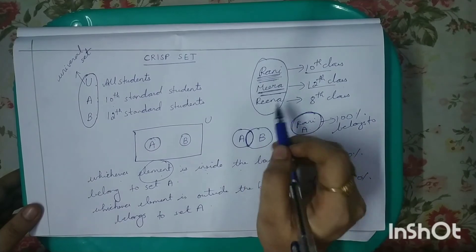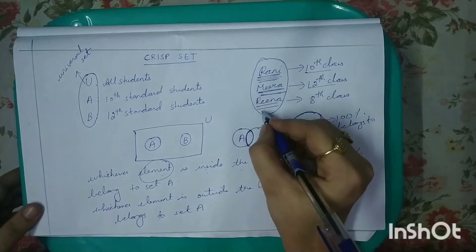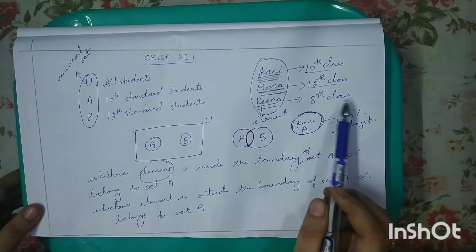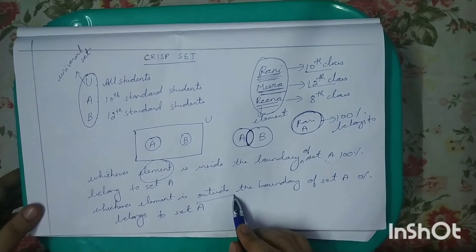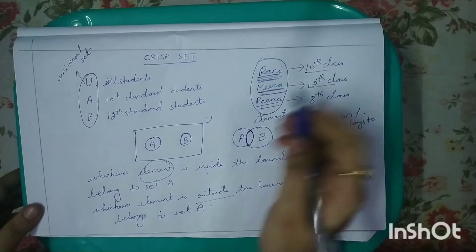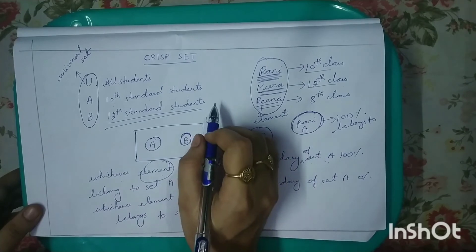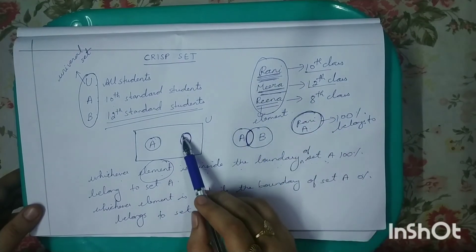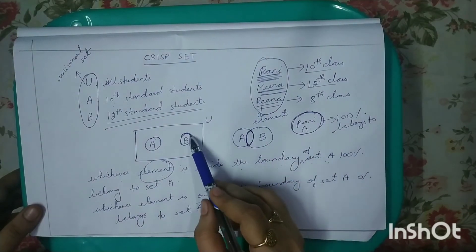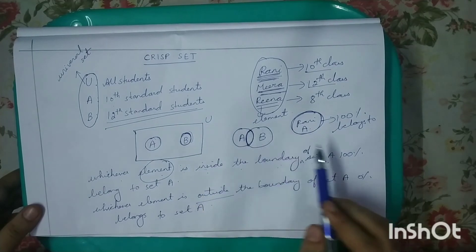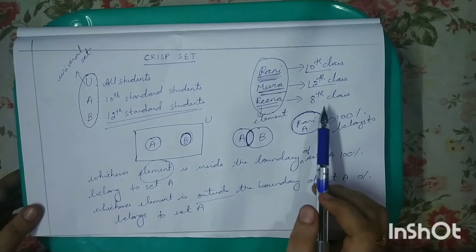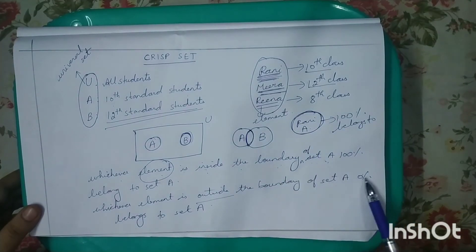Rina is also outside the boundary of set A because she is not from 10th class — she is from 8th class. Therefore 0% she belongs to set A. Now for set B: Rani is from 10th class whereas set B allows only 12th standard students, so Rani is outside the boundary of B — 0% she belongs to set B. Meera is from 12th class, so she belongs to set B — 100% she belongs to set B. Rina doesn't belong to set B either, so 0% she belongs to set B.